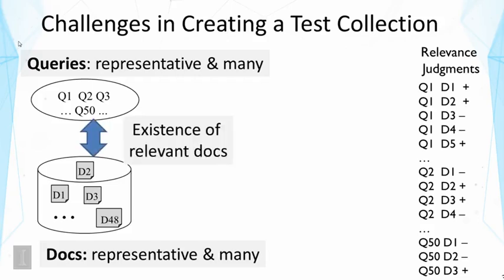For the matching of relevant documents with the queries, we also need to ensure that there exist a lot of relevant documents for each query. If a query has only one relevant document in the collection, then it's not very informative to compare different methods using such a query, because there's not much room to see a difference. So ideally, there should be more relevant documents in the collection, yet the queries should also represent the real queries that we care about.